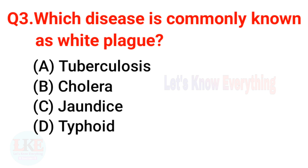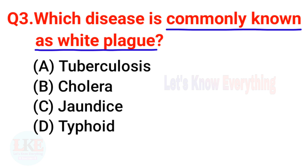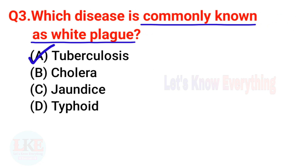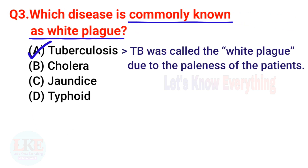Question 3: Which disease is commonly known as the white plague? Options: A) Tuberculosis, B) Cholera, C) Jaundice, D) Typhoid. The right answer is option A — tuberculosis (TB). TB was called the white plague due to the paleness of the patients.